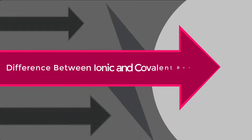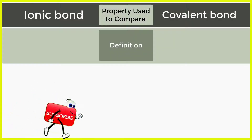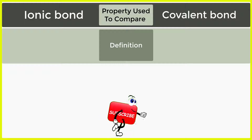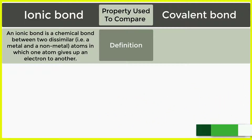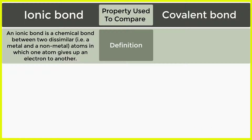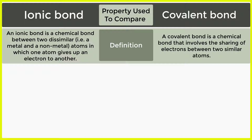Difference between ionic and covalent bond. Definition — Ionic bond: an ionic bond is a chemical bond between two dissimilar atoms, that is a metal and non-metal, in which one atom gives up an electron to another. Definition — Covalent bond: a covalent bond is a chemical bond that involves the sharing of electrons between two similar atoms.